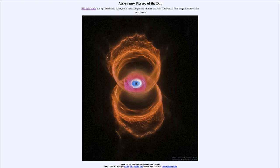It was titled MYCN 18, the engraved hourglass planetary nebula. We'll be back again tomorrow for the next picture, previewed to be witch head. So we'll see what that is about tomorrow. And until then, have a great day everyone and I will see you in class.